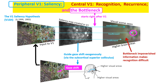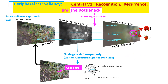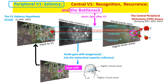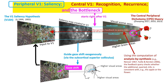The bottleneck makes information impoverished, so that recognition can be ambiguous. Even in central vision, one may be uncertain — for example, whether this is a red flower or a red apple. I propose that central vision can send feedback to query for additional information, particularly from V1, to resolve the ambiguity.